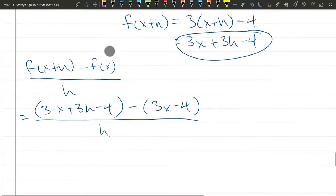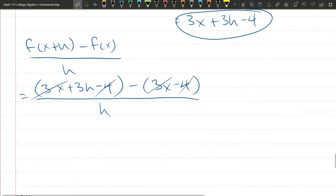We're not ready to cancel yet. We have 3x minus 3x. Those are going to cancel out. We have a minus 4, and like I said earlier, it's minus a negative 4, which is a plus 4. All those four terms are gone now. We're just left with positive 3h divided by h.